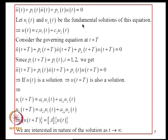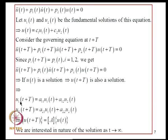The equation admits two fundamental solutions U₁ and U₂, and any solution U can be written as a linear superposition C₁U₁ + C₂U₂. Considering the governing equation at time t + T, since the coefficients are periodic with period T, P₁ and P₂ remain the same. This means if U is a solution then U at t + T is also a solution. So the fundamental solutions at t + T can be expressed in terms of U₁ and U₂ through a matrix A, giving U(t+T) = A·U(t).